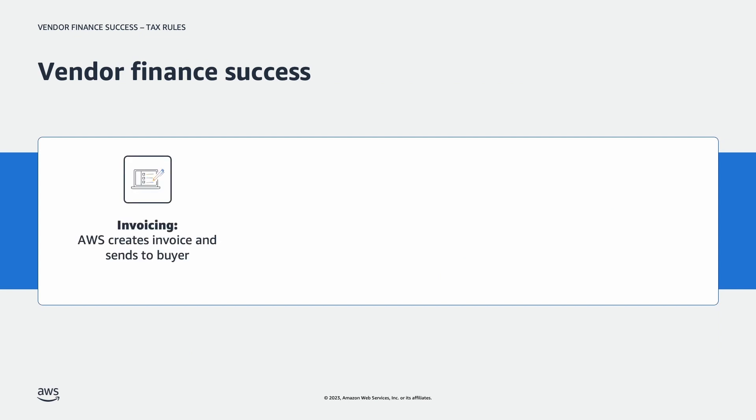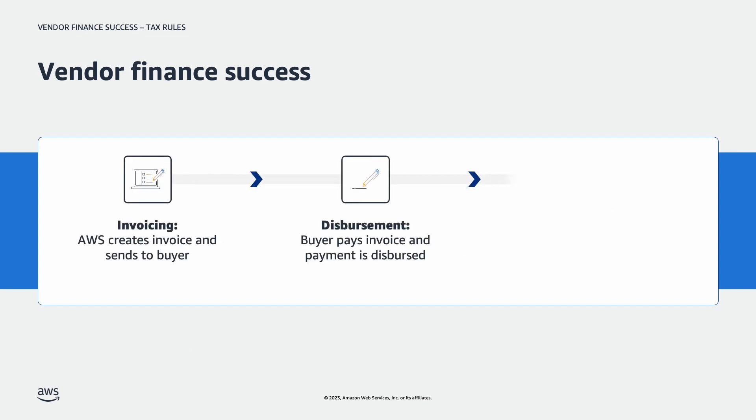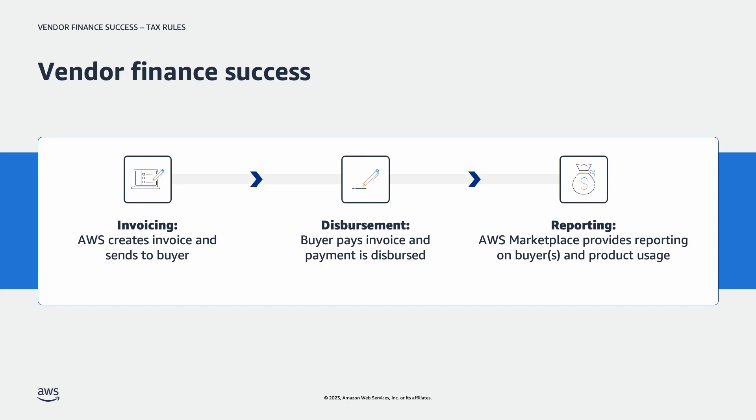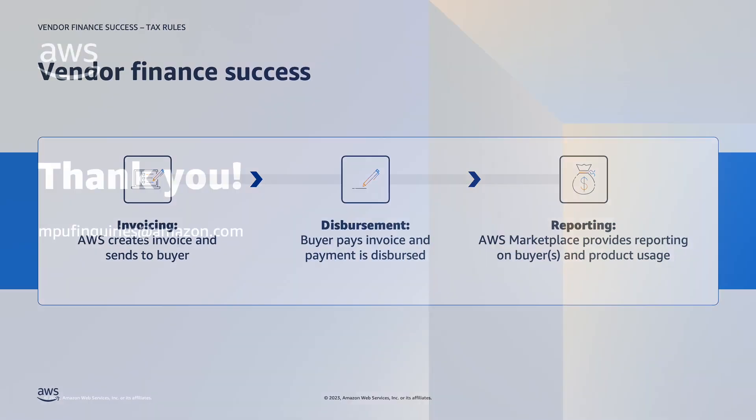To summarize, there are three key steps for vendors once a private offer is accepted – invoicing, disbursement, and reporting. In this video, we discussed how tax assessments and exchange rates can affect the invoicing process. You can check out our other videos related to disbursement and reporting if you'd like more information on those steps of the process.